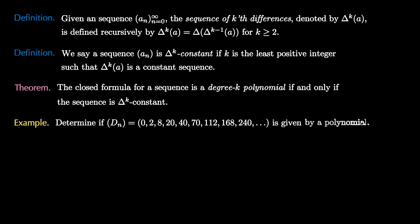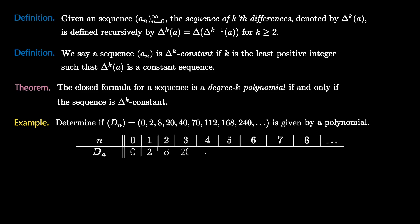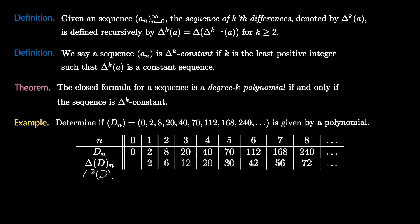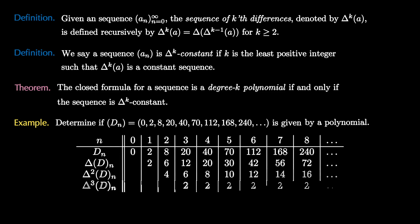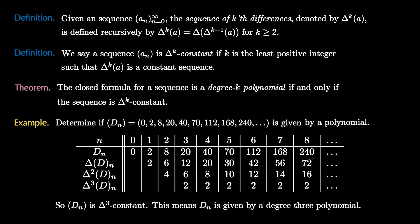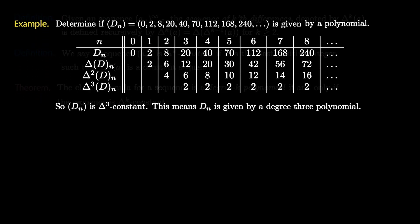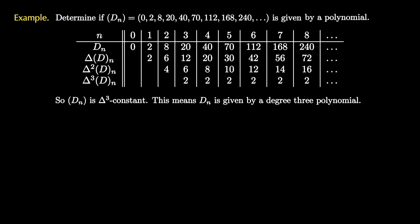Let's apply this theorem to an example. We determine whether the sequence d_n is given by a polynomial closed formula by building the table of first, second, and third differences. Sure enough, the third differences form a constant sequence. This means the sequence is delta-3 constant, and therefore d_n is given by a degree 3 polynomial. It's amazing the theorem tells us this, but that leads to another question: can we actually find the polynomial formula?